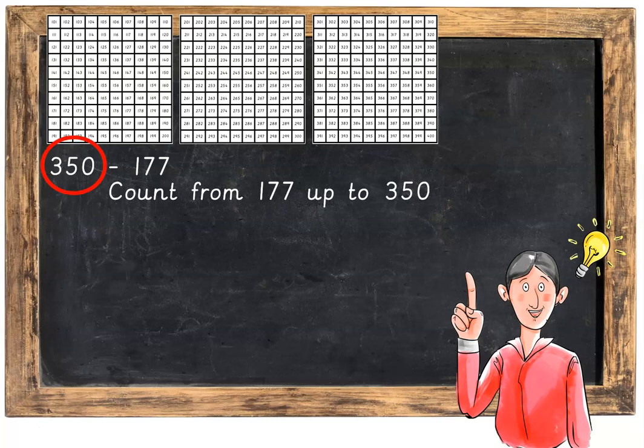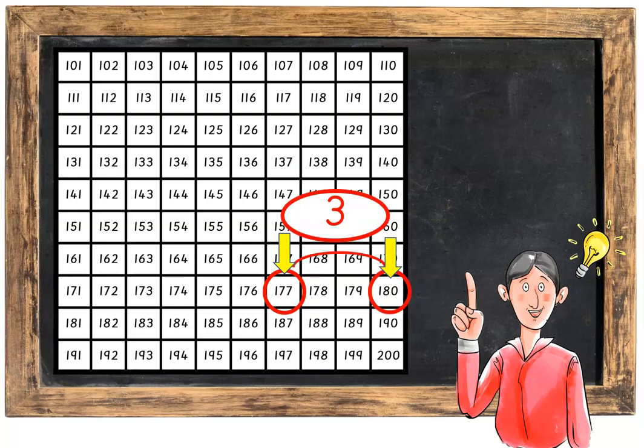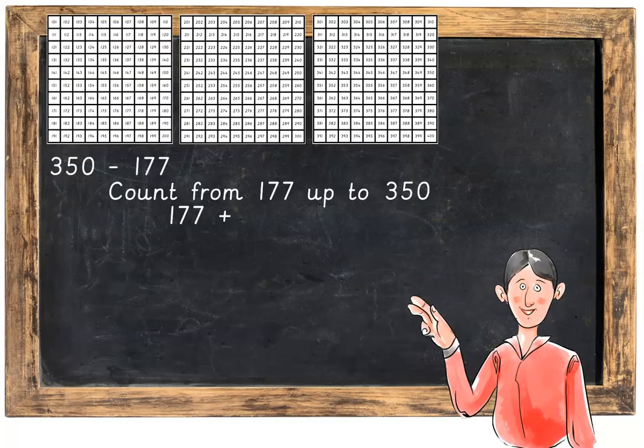The biggest number is 350, so we only need up to 400 on the 100 squares. Starting at 177, the nearest number is 180, which is a jump of 1, 2, 3. So 177 plus 3 gives us 180.